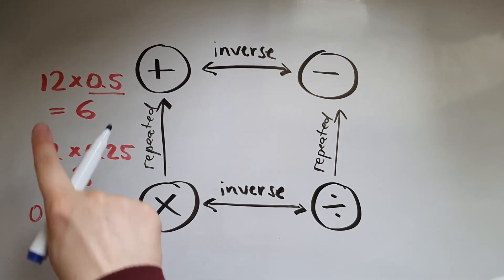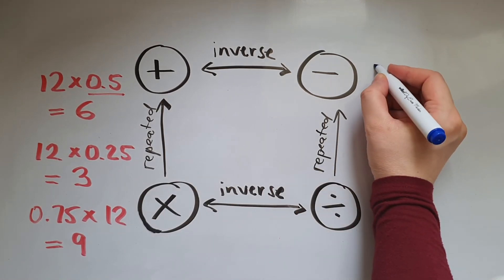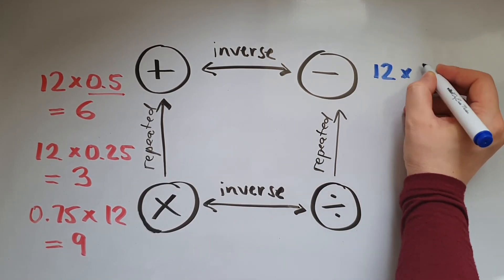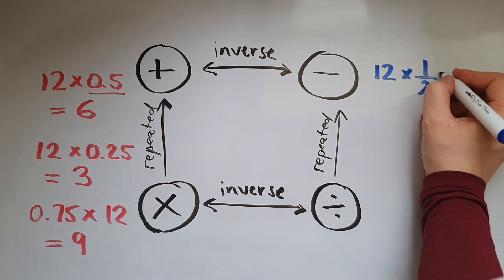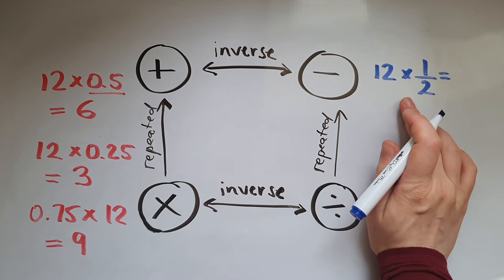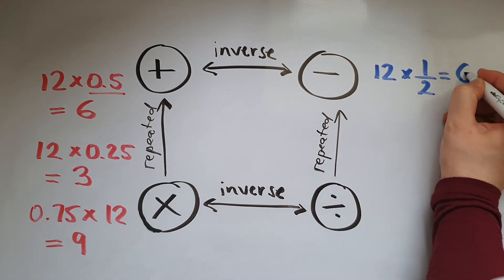In a similar fashion, if I multiply 12 by half the fraction, then I'm working out half of 12, which gives me 6.